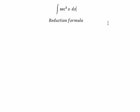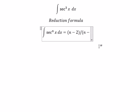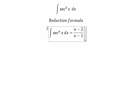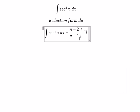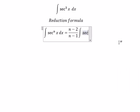We have the integral of sec x to the power of n equals n minus 2 over n minus 1 times the integral of sec x to the power of n minus 2.